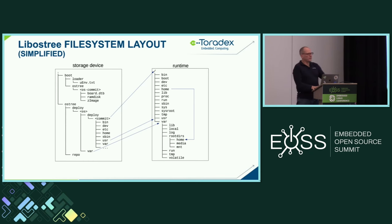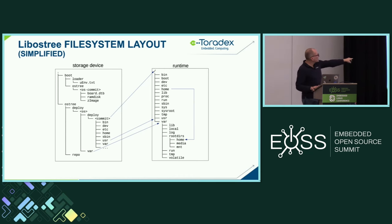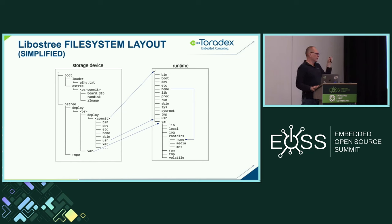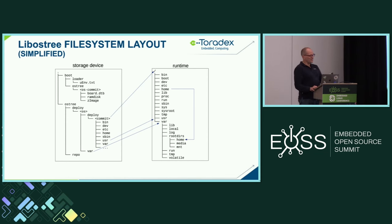The image on the left is the storage device. You've got your boot directory with all the kernel and bootloader environment information. Then you have your actual OSTree repo at the bottom — if you look inside there, it's very much like a Git repo where you see directories with the first two characters of the commit hash and all the objects underneath. Under the deploy directory are individual commits, which are basically hard links to objects in the repo that form the actual runtime directory.